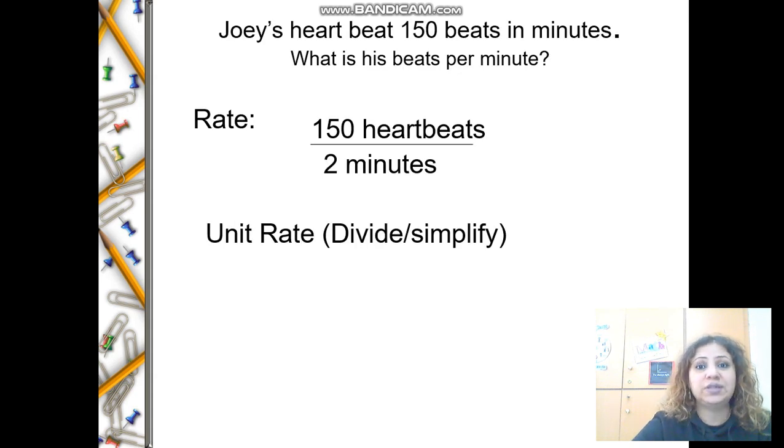Joey's heart beat 150 beats in two minutes. What is the beat per minute? The rate is going to be 150 heartbeats to 2 minutes. To find the unit rate, divide or multiply. How am I going to get a denominator of one?